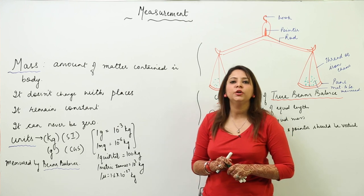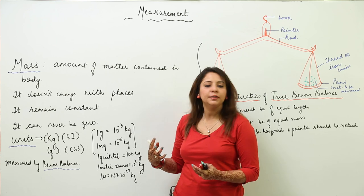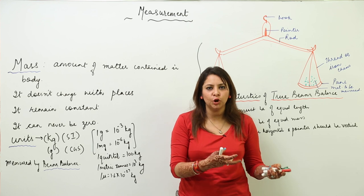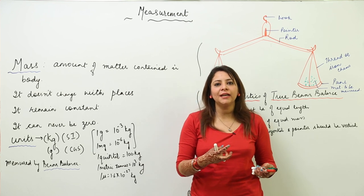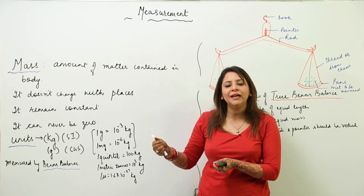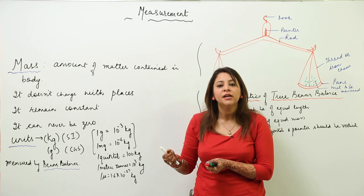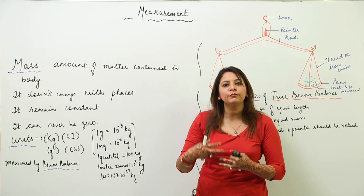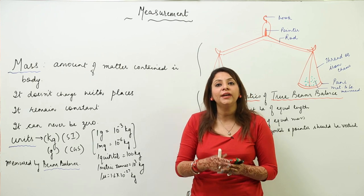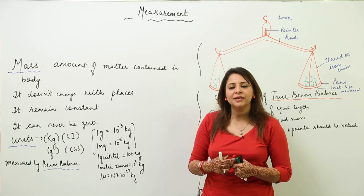We are going to start with the unit of measurement. When we buy something from the market or ask for something from a grocer, we need a given quantity. For example, if I need 1 kg of pulses, the grocer must have something to measure that. So measurement is very important — we need to measure things.